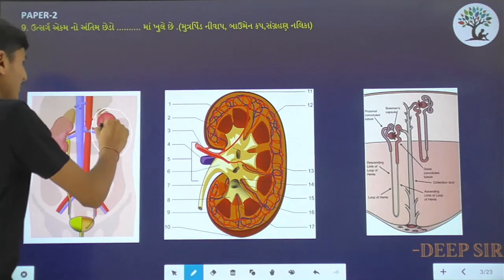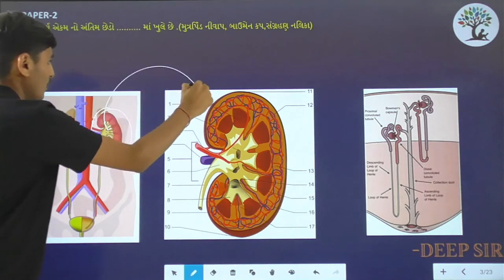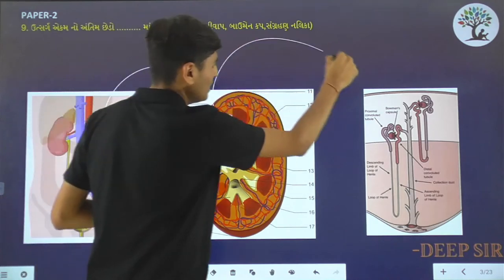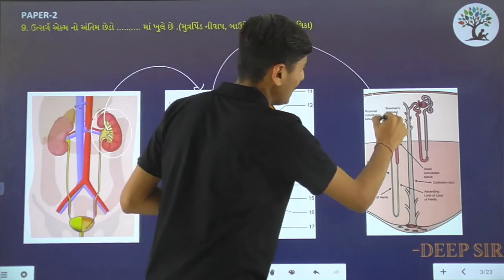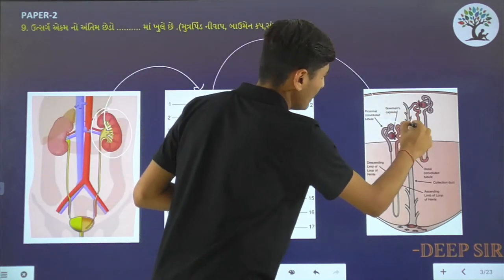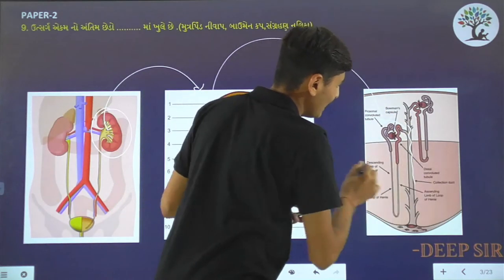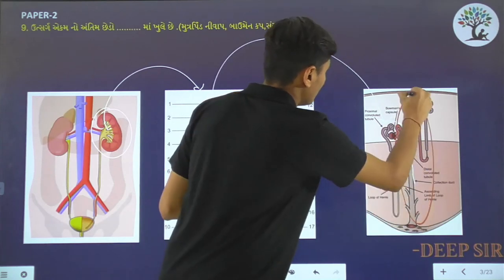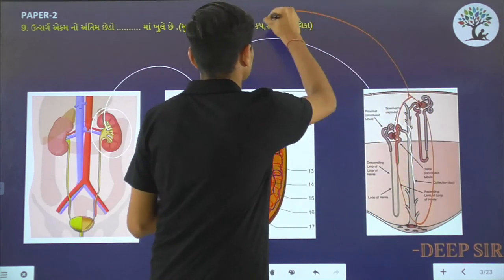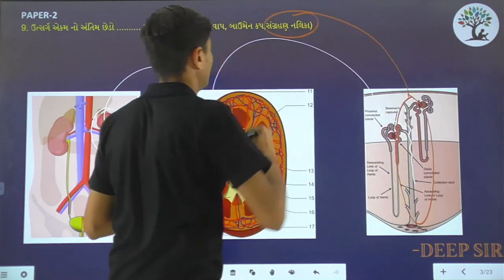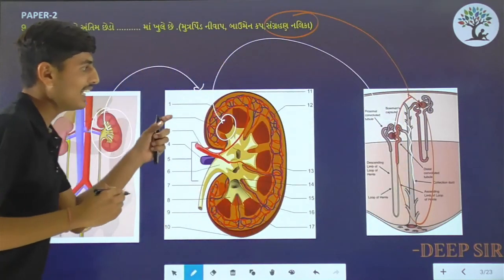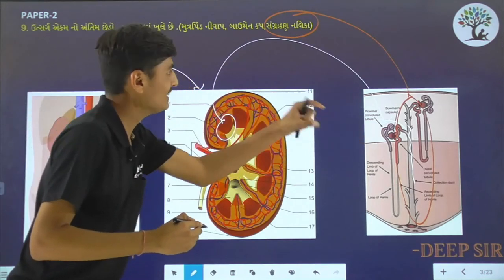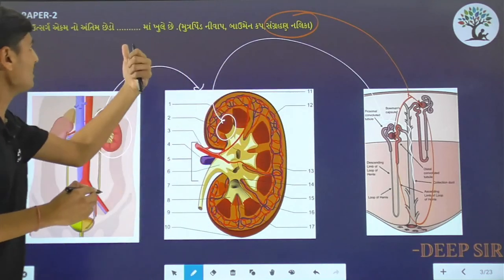We use a new area to take place. This is a nephron, and we have to zoom in here, so we can see this in the last one. This is Sangrha Nalika. We have to zoom in this way. The answer is Sangrha Nalika.